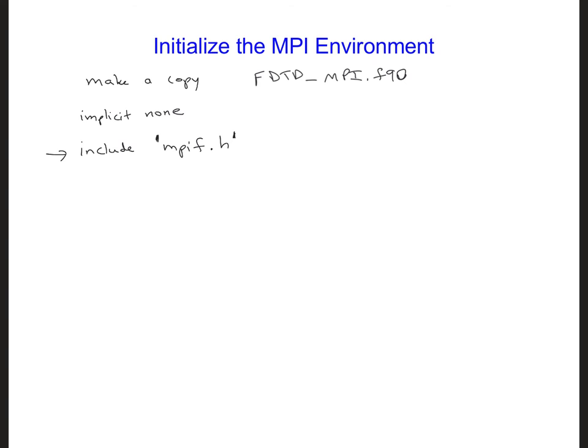To initialize the MPI environment, add to the code after declaring all the variables. So here, there's a section where we declare the variables and the arrays. But before you start assigning them values or allocating space to them, add call MPI_INIT.